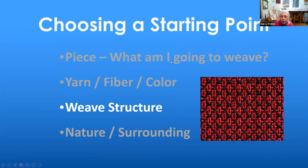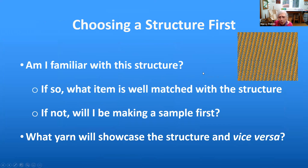Sometimes I like to start my project from a structure — often because I'm studying the structure or I'm going to be teaching it. My question then becomes, am I familiar with the structure? For example, am I going to weave a twill I've never woven before, but I'm familiar with twills? If I'm broadly familiar with a group of structures, I can think about what that structure is well matched for. If not, I'll be making a sample first — yes, I'm a big believer in sampling to avoid disasters.